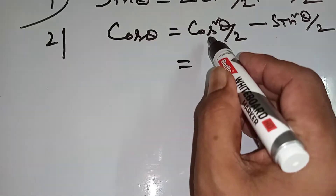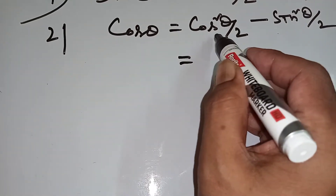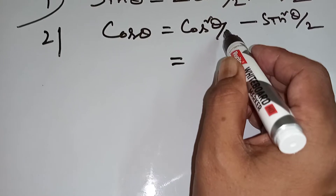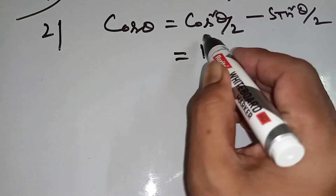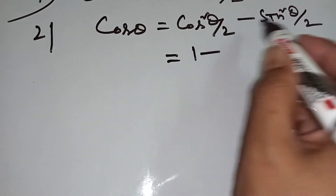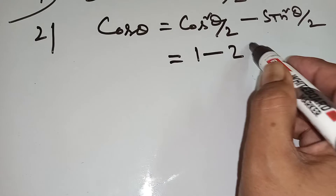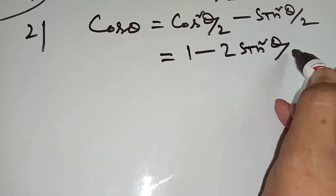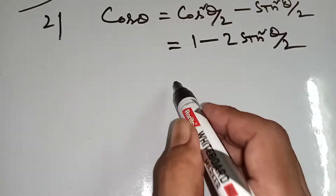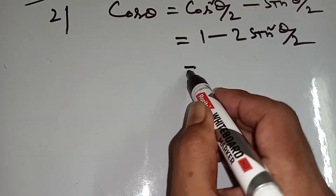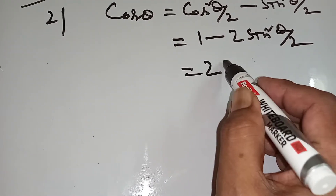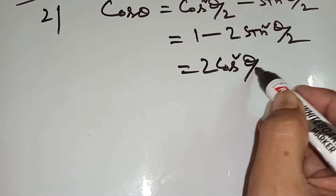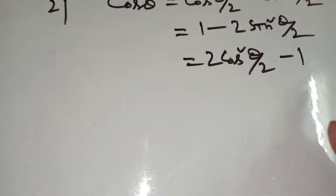If you change cos square theta by 2 in terms of sin, then it will be 1 minus 2 sin square theta by 2. Again, written in terms of cos: 2 cos theta minus 1.